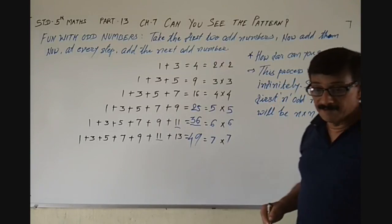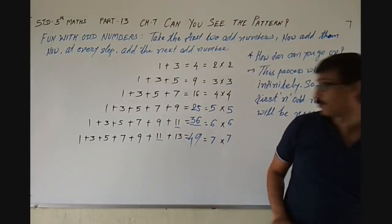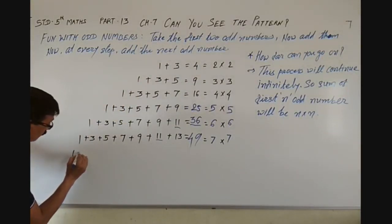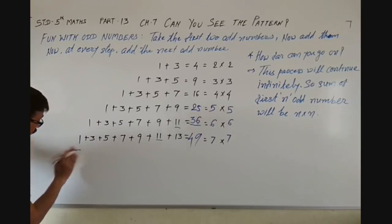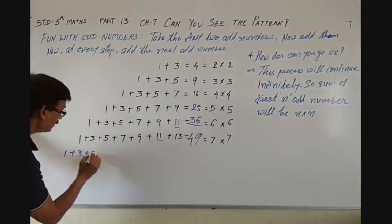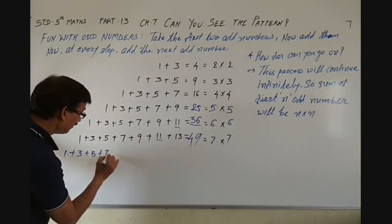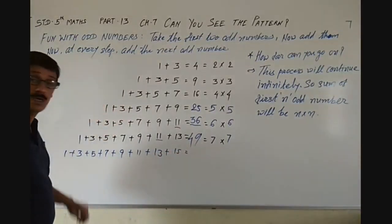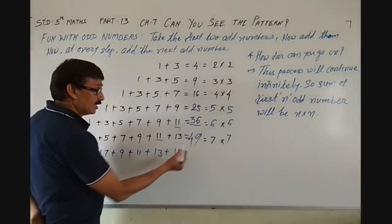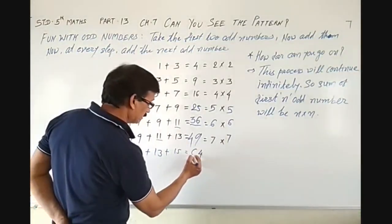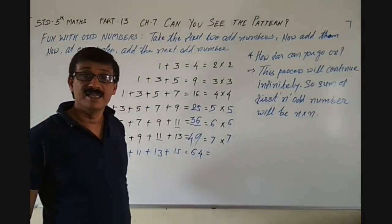Now let's go for the next. We have 49. Let's add up to 15. 1 plus 3 plus 5 plus 7 plus 9 plus 11 plus 13 plus 15. We know 49 plus 15: 9 plus 5 is 14, carry 1; 4 plus 1 plus 1 is 6, giving 64. And 8 times 8 are 64.